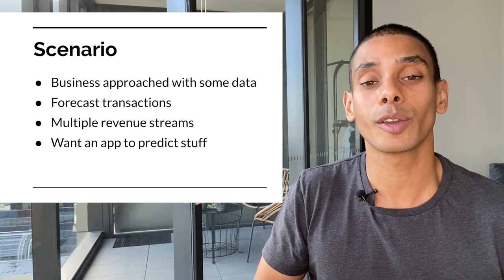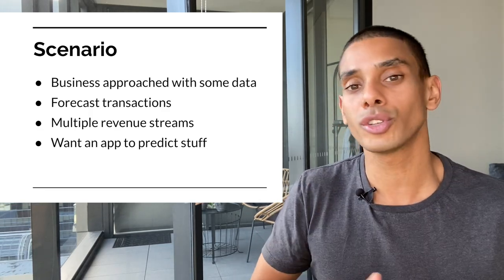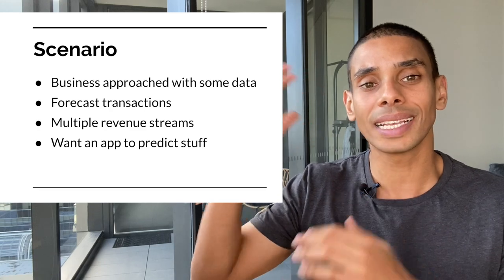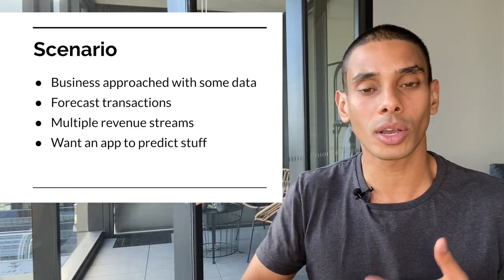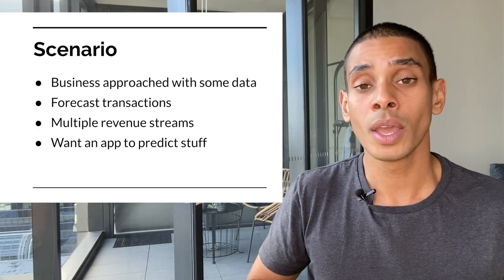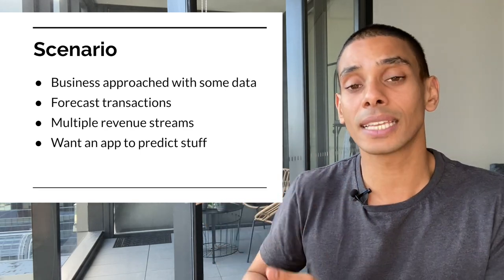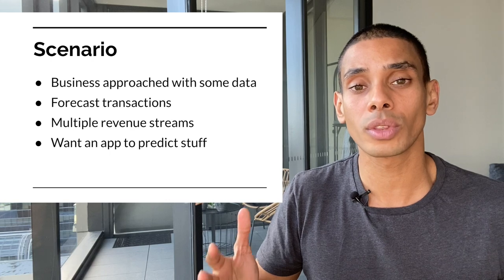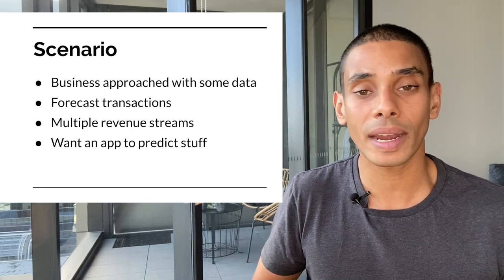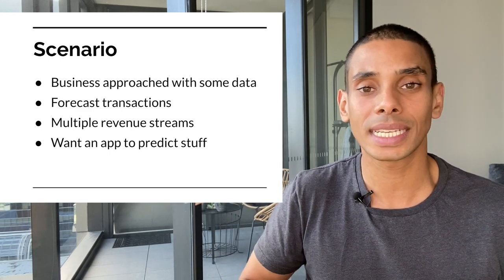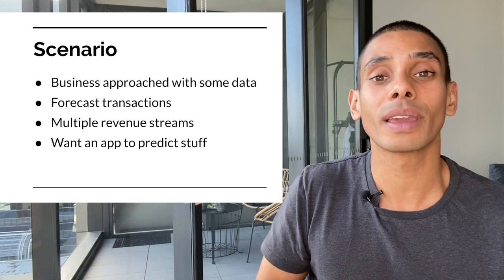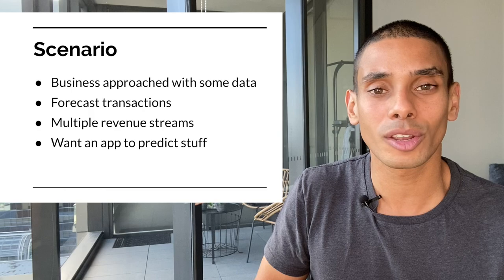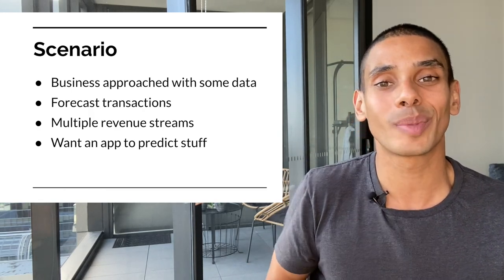In terms of the specific scenario we're going to be tackling, we've got a mock scenario set up. A business has approached us with some data and they want to forecast transactions. The data they've given us is a list of accounting transactions — we've got accounts, cost centers, and a year and month column. What they want to do in the end is predict the value of each specific account in the future. We're going to start off with exploratory data analysis and also cover the CRISP-DM model.